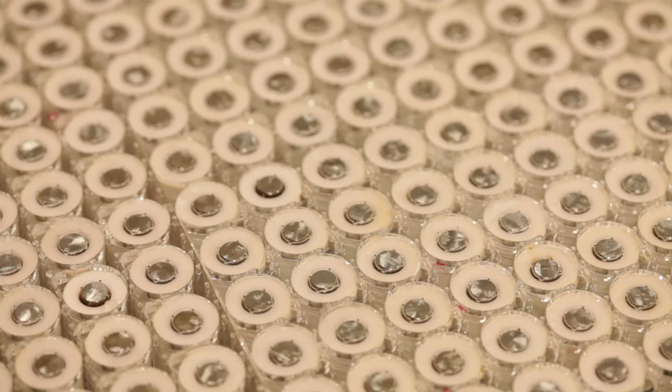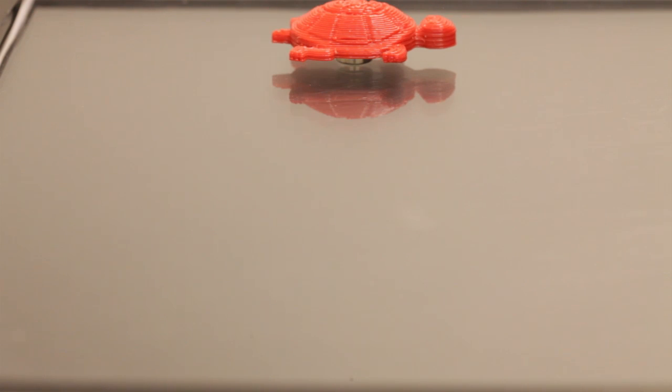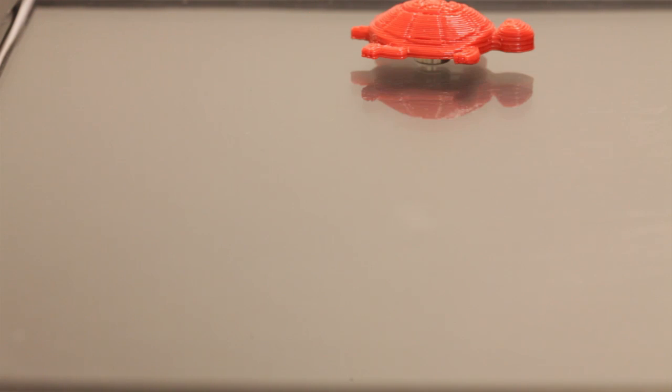Finger Flux uses a table that contains an array of electromagnets. These create a complex magnetic field on and above the table surface that can be controlled dynamically. This technique has been used previously to actuate physical objects, or tangibles, on a table.